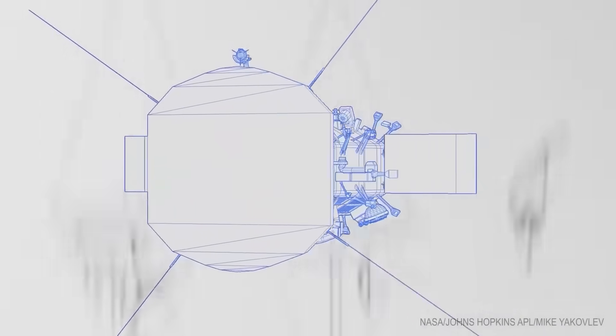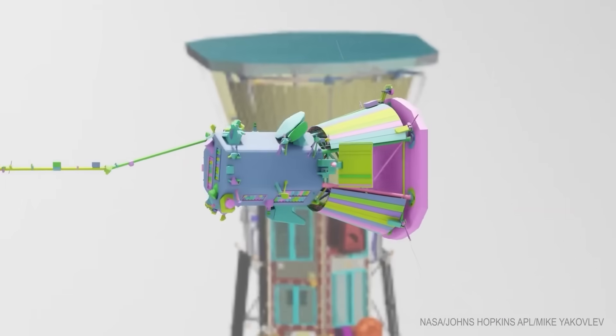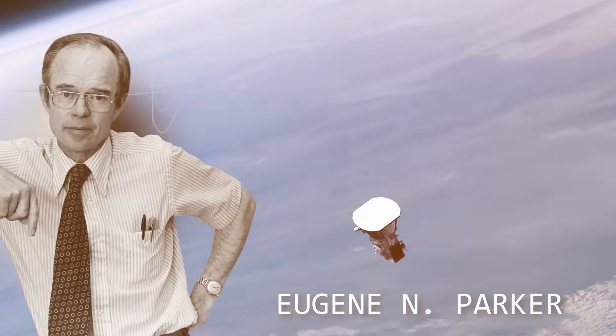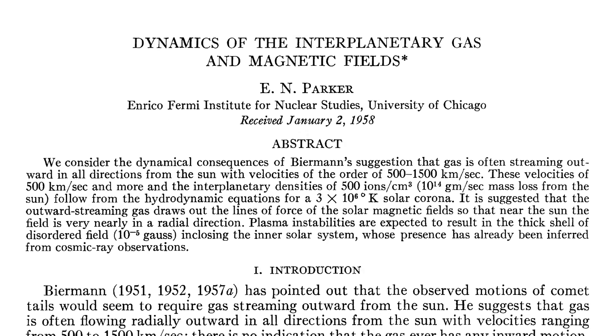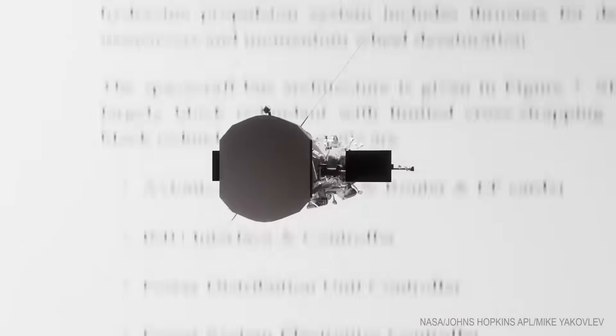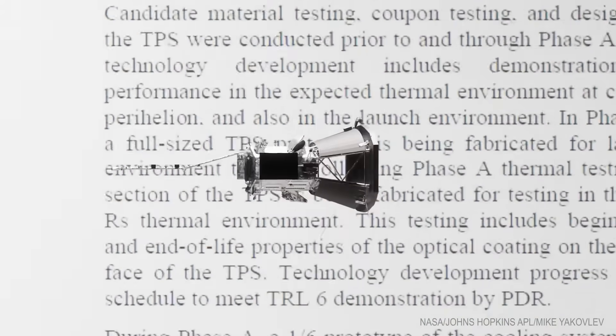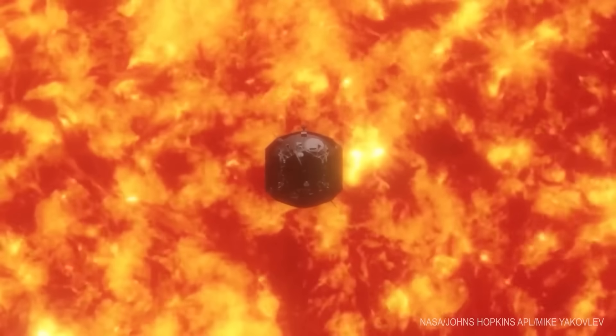Tucked deep within the Parker probe is a tiny item most people don't know about, a memory card. On it, a photograph of Eugene Parker, his original 1958 paper predicting the solar wind and the names of 1.1 million people from Earth. Symbolic, poetic, and now possibly consequential.